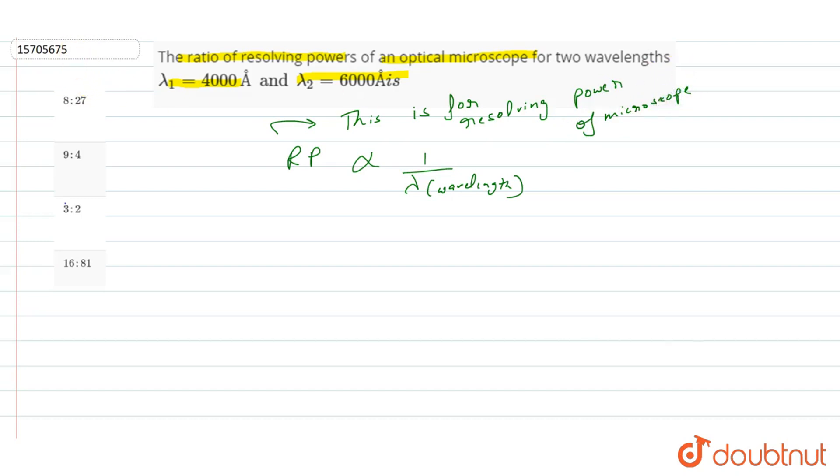So for the resolving power of microscope, RP1 upon RP2. This is lambda 2 upon lambda 1. So 6000 divided by 4000 that is equal to 3 by 2.